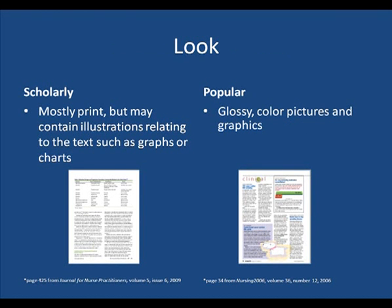Scholarly articles are mostly print, but when they do have illustrations, they are often charts or graphs, as shown here. For healthcare topics, there may also be a picture to illustrate a certain condition. Popular articles will have glossy color pictures or graphics, such as the dog graphic used here in an article about pet therapy.